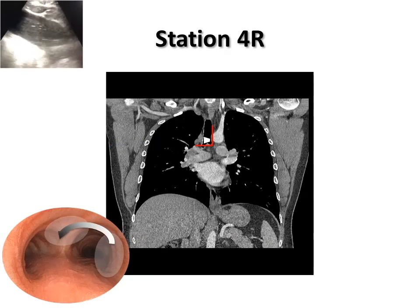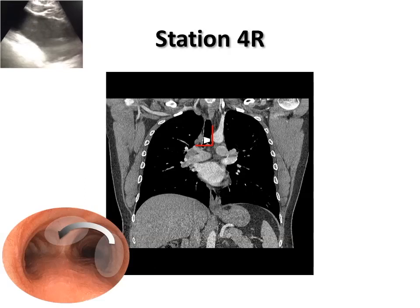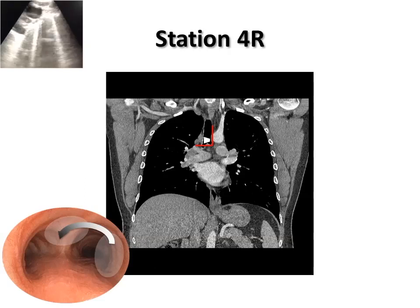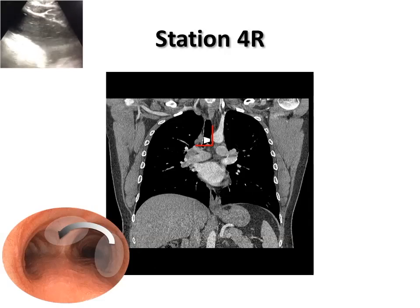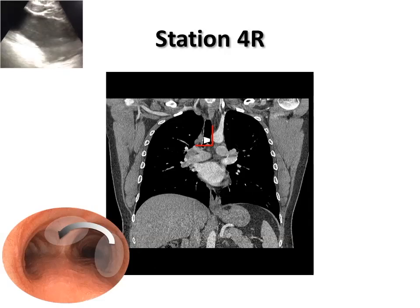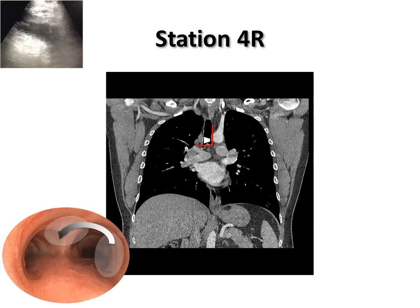The scope is positioned into the right upper lobe bronchus, then while maintaining the transducer turned toward the 3 o'clock position, the scope is retracted from the right main stem bronchus to the distal trachea. We can see the azygous vein terminating in the SVC when turning the scope counterclockwise.